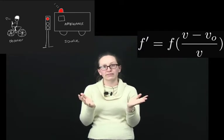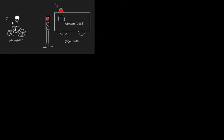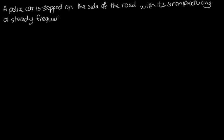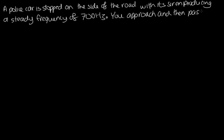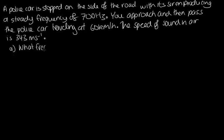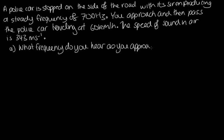Let's try a problem using this equation. A police car is stopped on the side of the road with its siren producing a steady frequency of 700 hertz. You approach and then pass the police car travelling at 60 kilometres per hour. The speed of sound in air is 343 metres per second. Part a: what frequency do you hear as you approach the siren? Part b: what frequency do you hear as you recede from the siren?